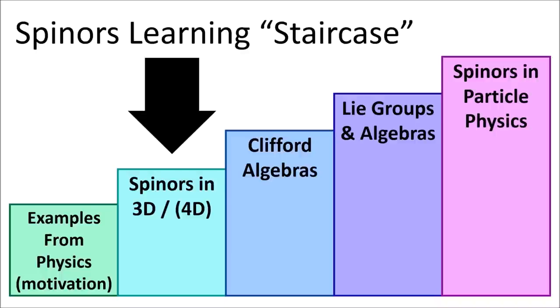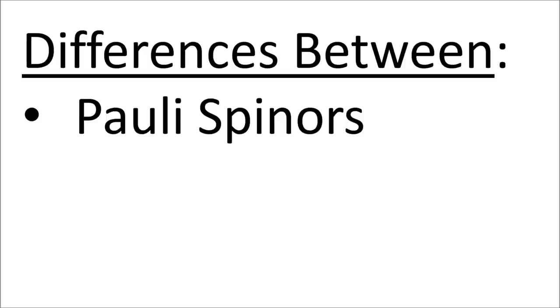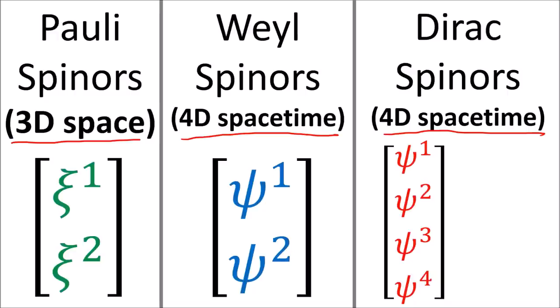We're continuing to study spinors from a mathematical point of view, and in this video we're going to discuss the difference between Pauli spinors, Weyl spinors, and Dirac spinors. The short answer is that Pauli spinors are two-component objects associated with 3D space, Weyl spinors are two-component objects associated with 4D spacetime, and Dirac spinors are four-component spinors associated with 4D spacetime, made up of a left chiral Weyl spinor and a right chiral Weyl spinor stacked on top of each other.